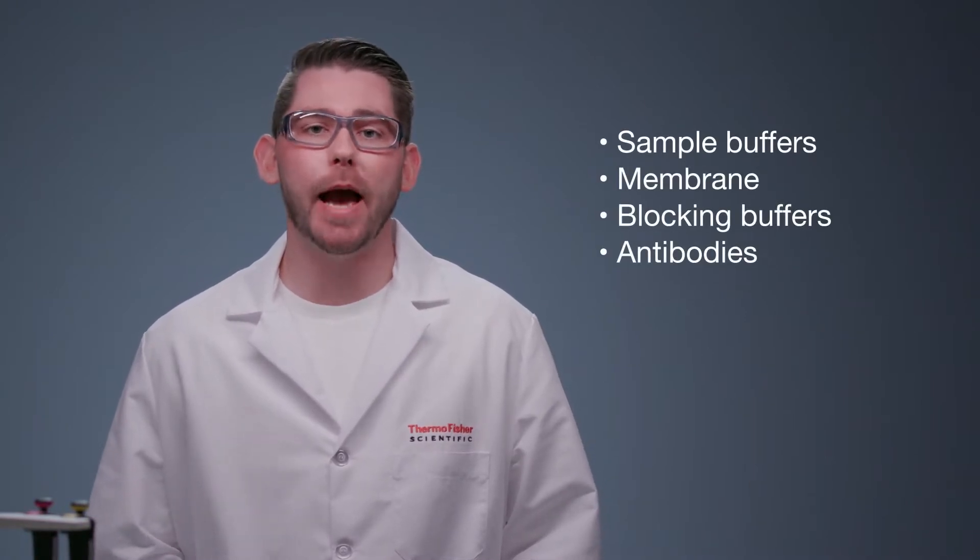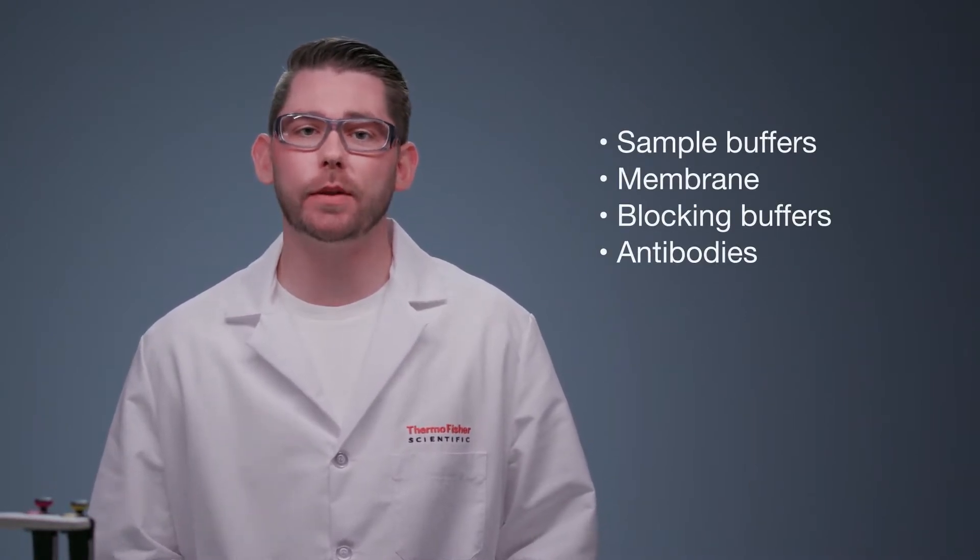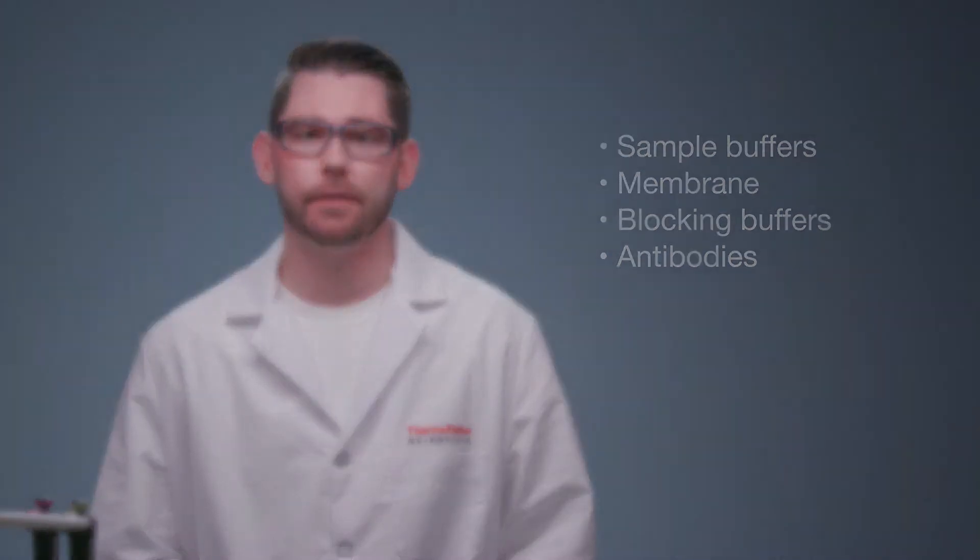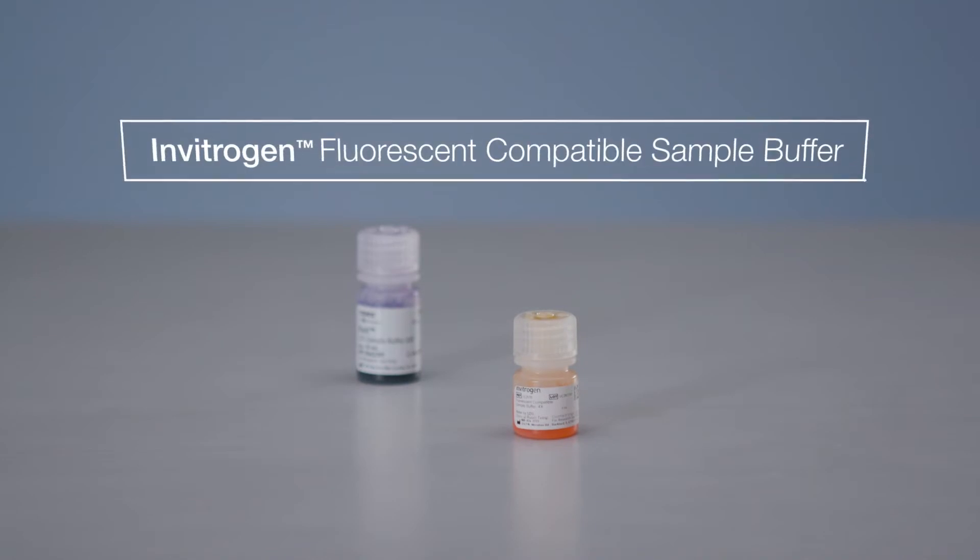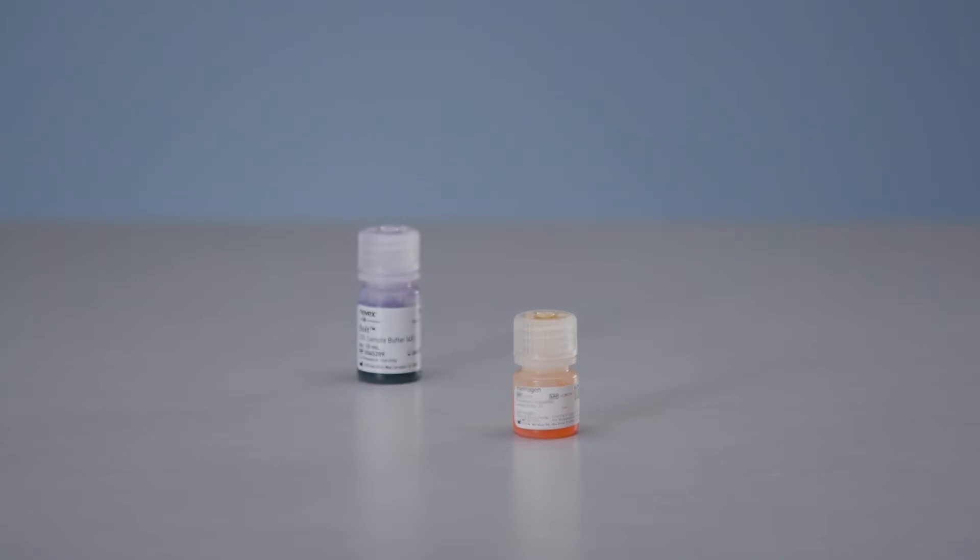When getting started with fluorescent western blotting, some reagents and steps will need to be optimized to help ensure background fluorescence does not interfere with detection of the protein of interest. Consider using fluorescent-friendly sample buffers without bromophenol blue, such as Invitrogen fluorescent-compatible sample buffer. For example, sample buffers containing bromophenol blue will fluoresce and can contribute to increased background.